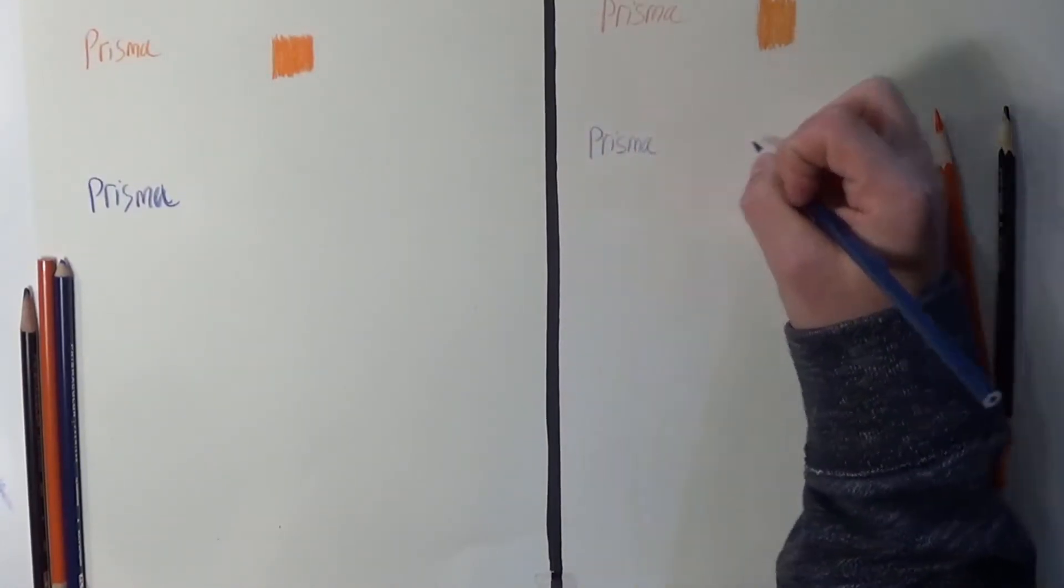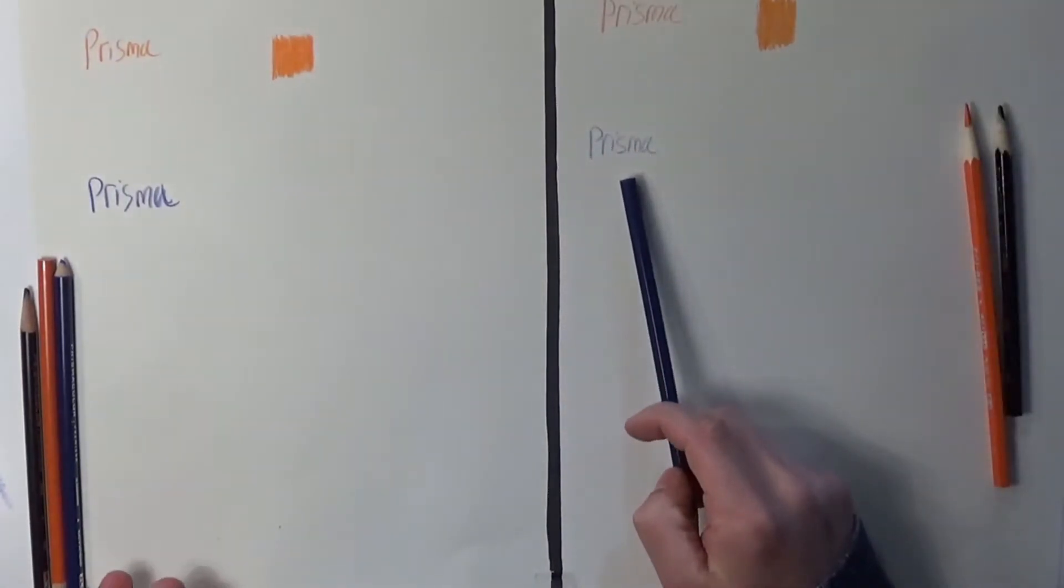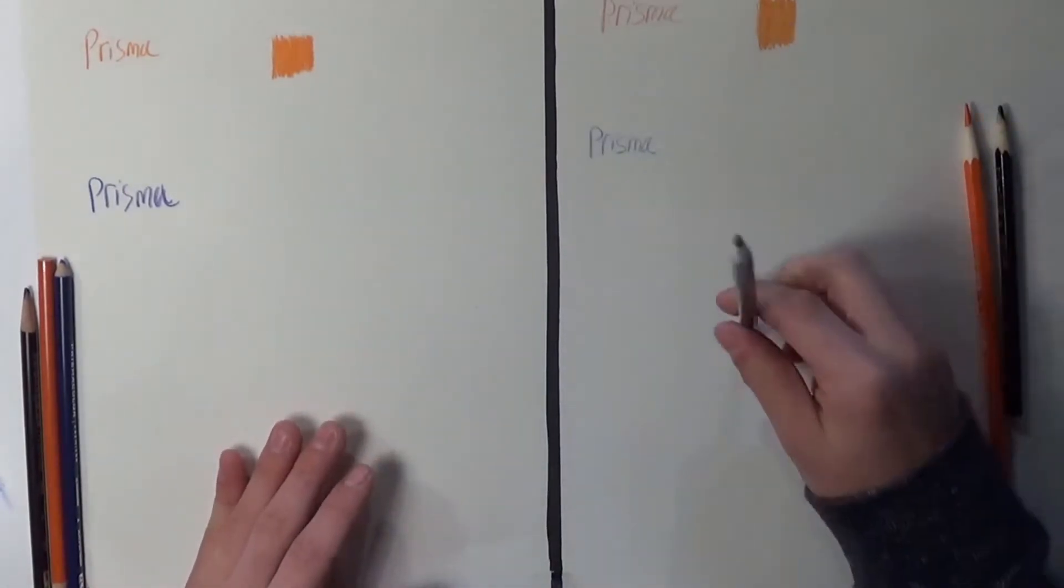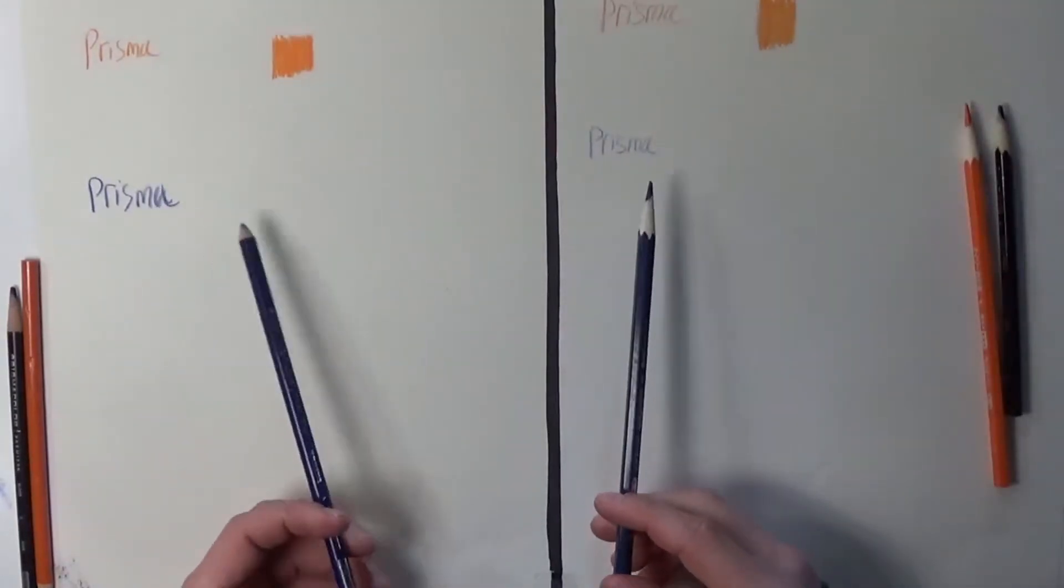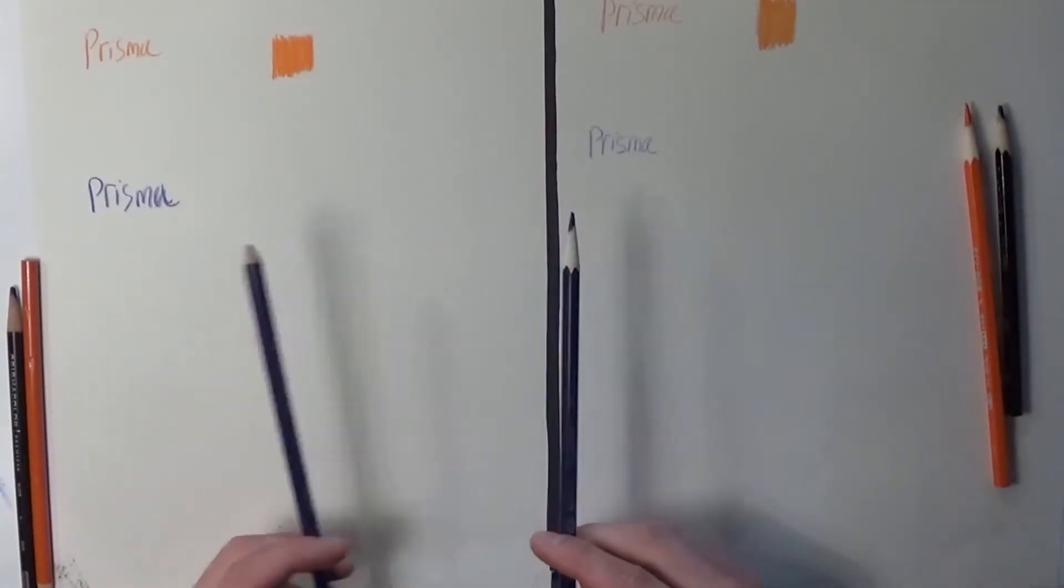Wow. Look how faded that is. You can't even see it. This is a really cheap pencil. This is an expensive one. So you kind of can see right here just the difference of how it writes.